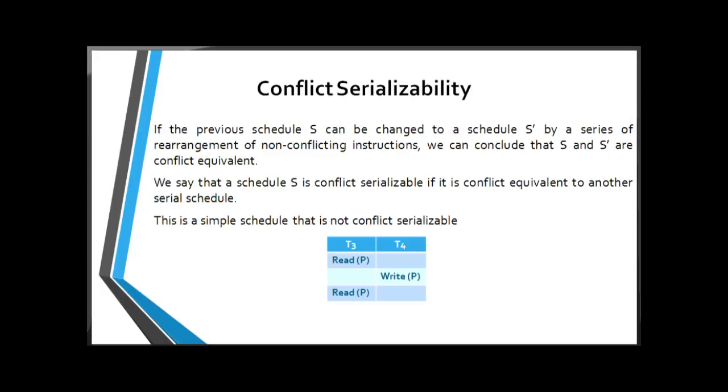If the previous Schedule S can be changed to a Schedule S prime by a series of rearrangements of non-conflicting instructions, we can conclude that S and S prime are conflict equivalent. We say that a schedule S is conflict serializable if it is conflict equivalent to another schedule.